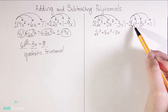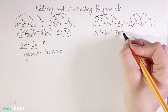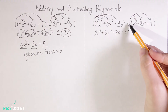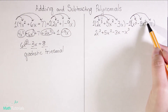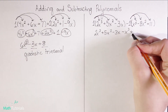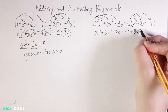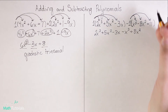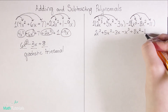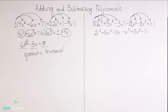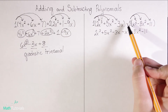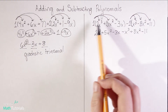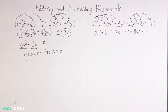Now coming to the second polynomial — in the same way that we had an understood 1 outside, we have an understood 1 outside here, but it's a negative 1. We need to distribute this negative 1 through the whole polynomial. The thing about multiplying by negative 1 is that it changes the sign of whatever is within the polynomial. Negative 1 times negative x cubed gives positive x cubed. Negative 1 times negative 8x squared gives positive 8x squared. Negative 1 times positive 11 gives negative 11.